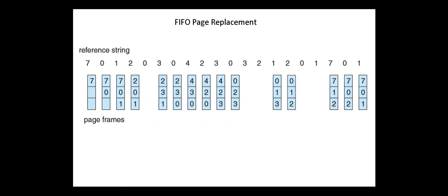A simple and obvious page replacement strategy is the first-in-first-out. For this string, we page fault to bring seven. The next page fault for zero and the next page fault for one. The next page is two and we have no free frame, so seven is chosen as a victim. Next, zero is there. Three — we choose zero as a victim.